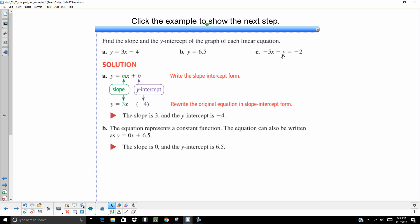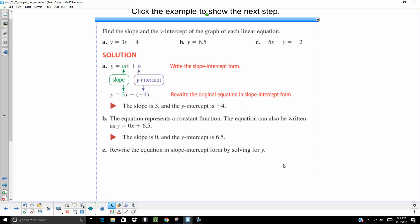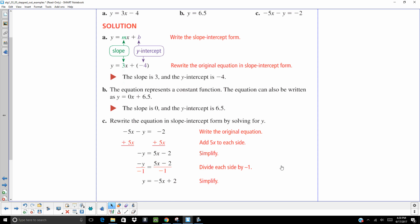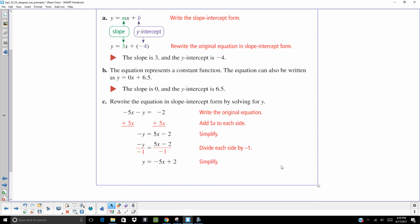On c, we're going to have to solve for y first. We've done that before. We're going to add 5x to both sides. Then we're going to have to divide by negative 1 and you get y equals negative 5x plus 2. The slope is negative 5. The y-intercept is 2.